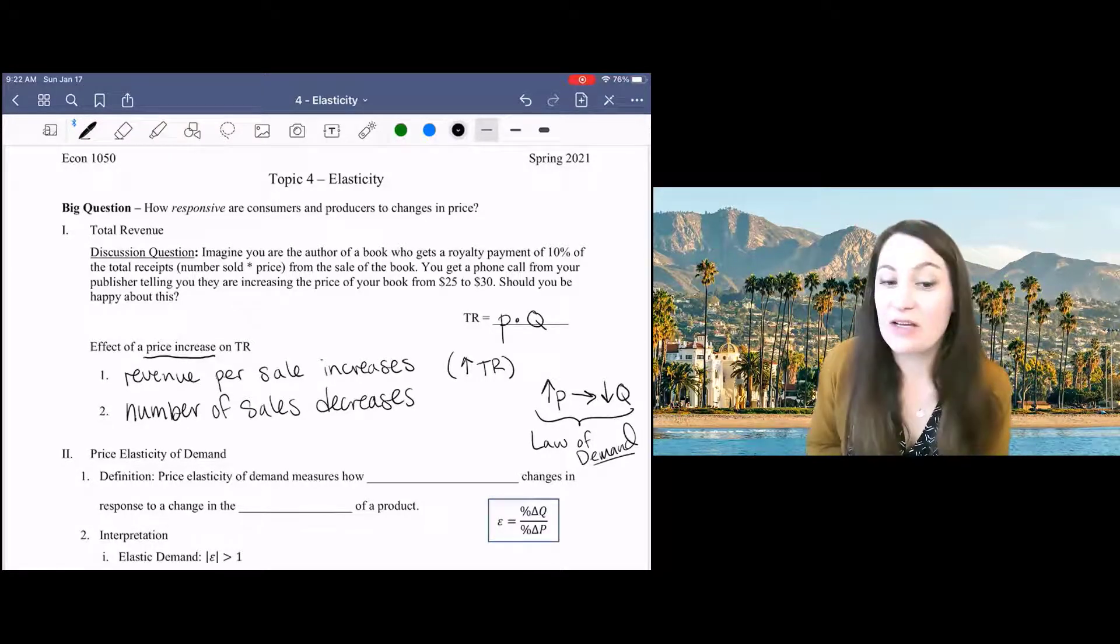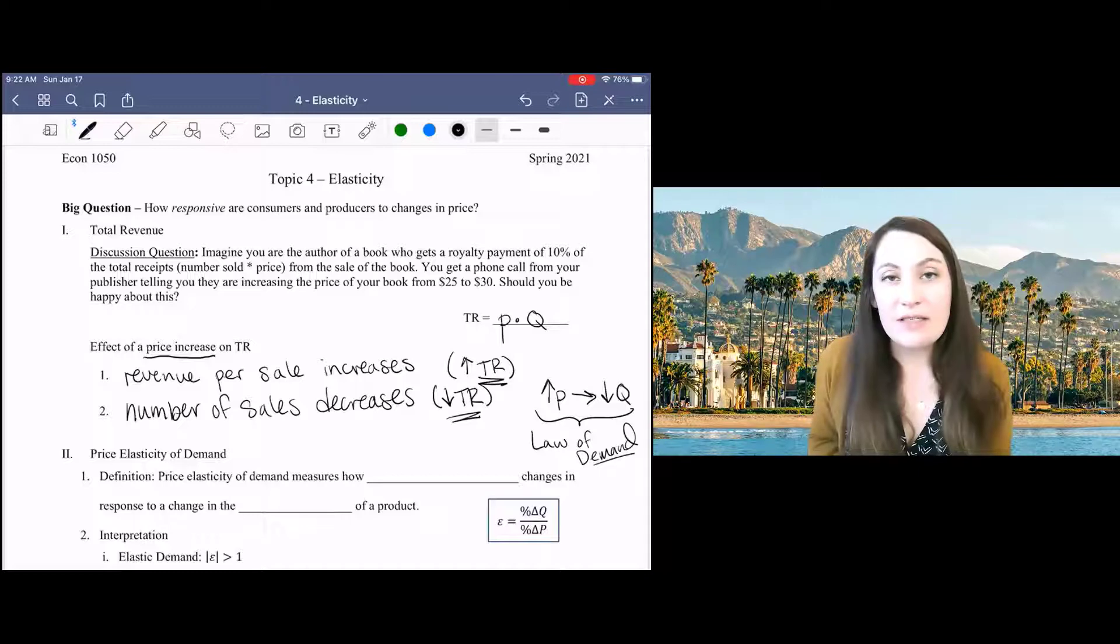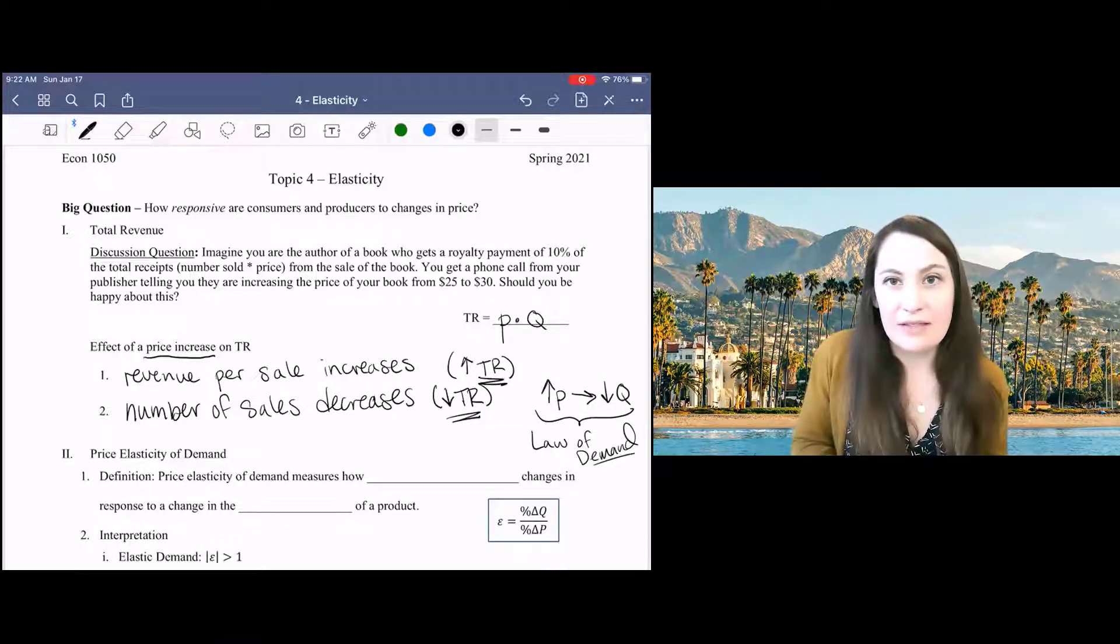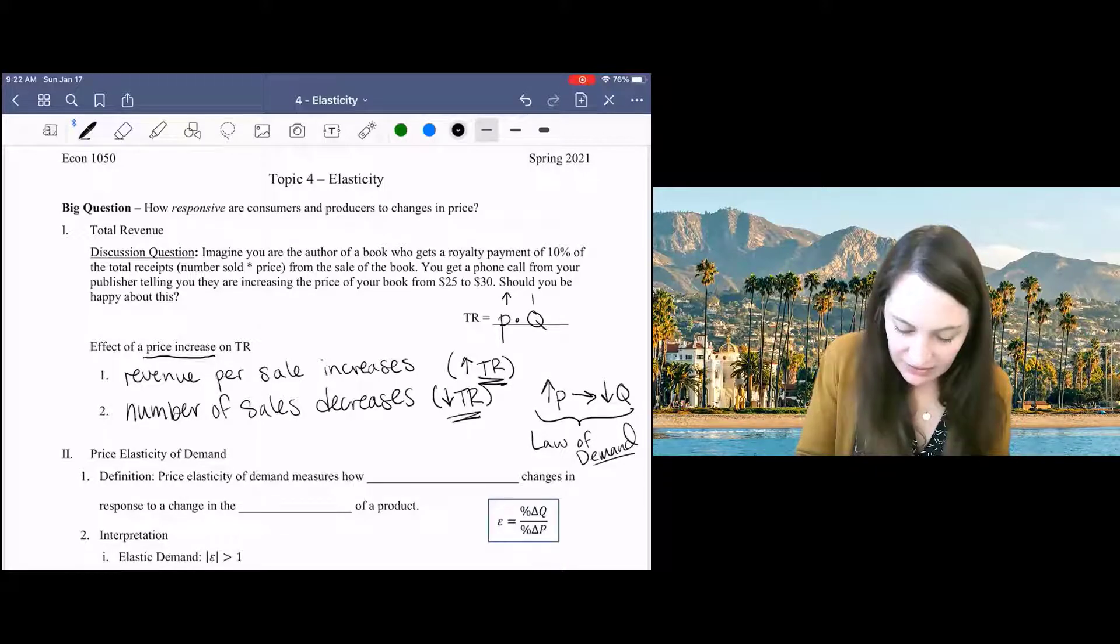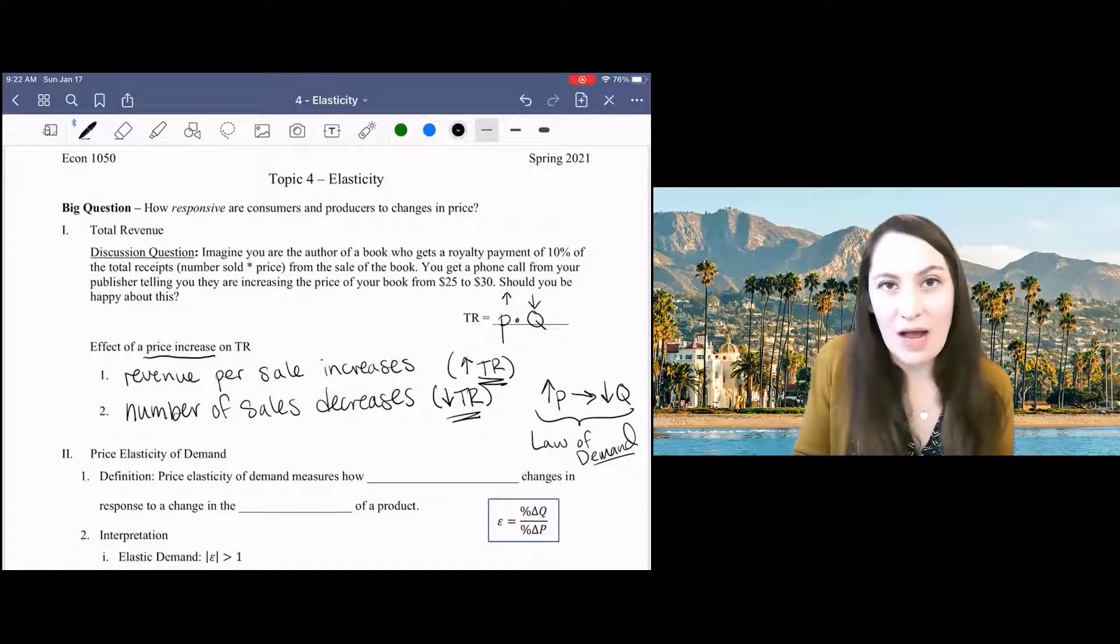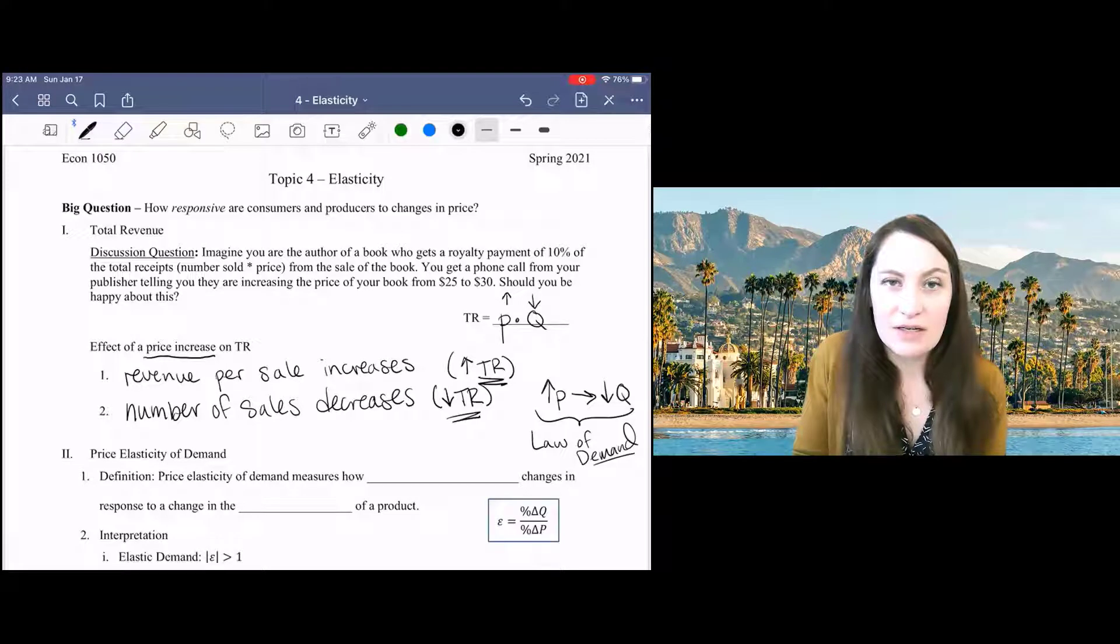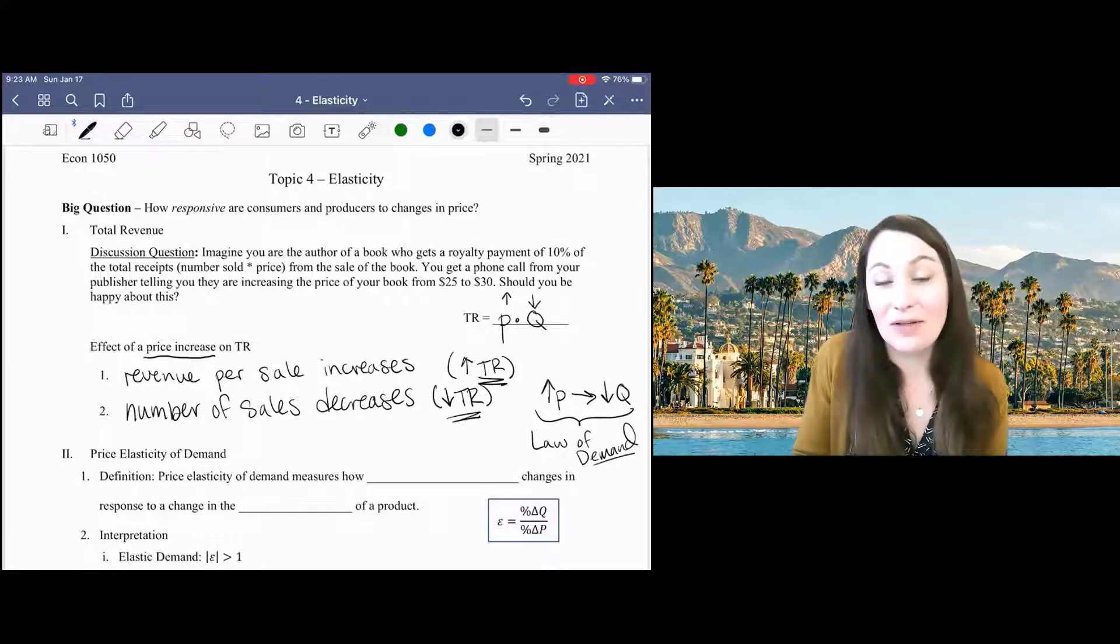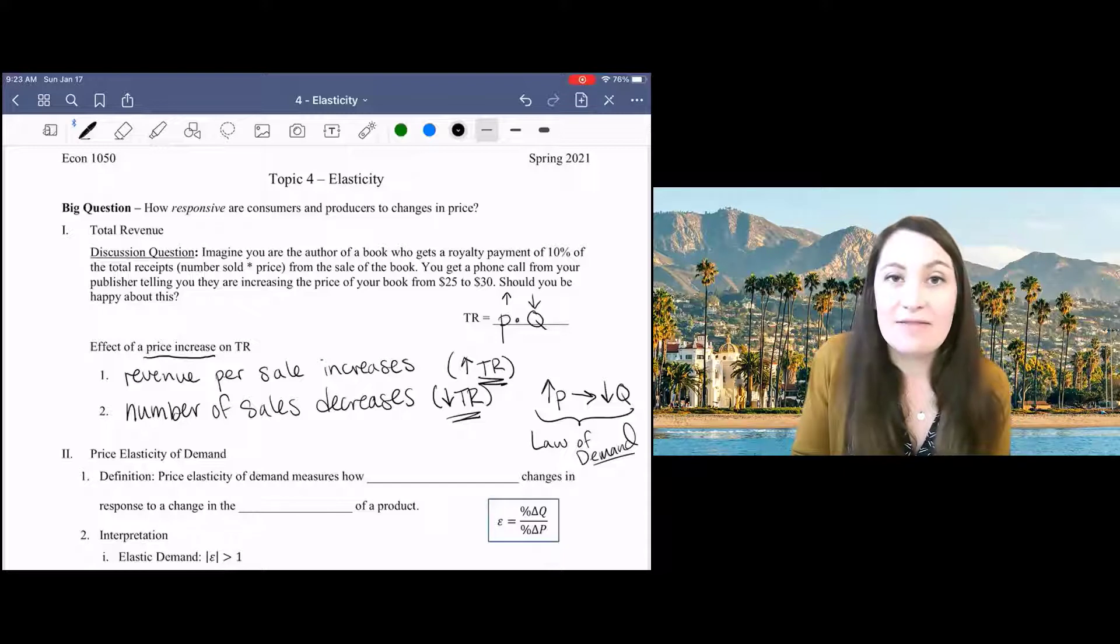And of course, holding other things constant, a decreasing quantity of sales would decrease total revenue. So you can see that the increase in price has two conflicting effects on total revenue, meaning that it's possible for total revenue to go up or down depending on the specific circumstances in which the price increase occurred. Because we have no other information in this question, we don't know what will happen to total revenue or royalty payments for your book. In order to answer that question, we need more information, and that's the information provided by the price elasticity of demand.